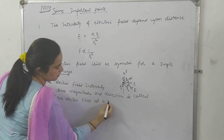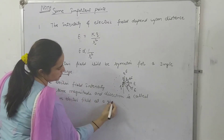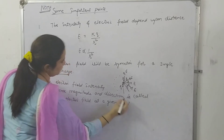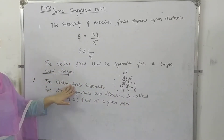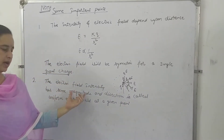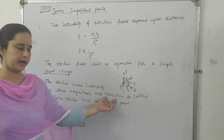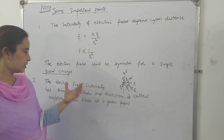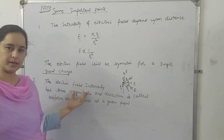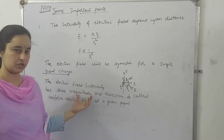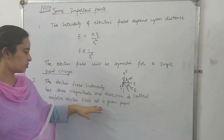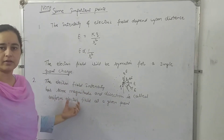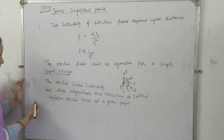When electric field intensity has the same magnitude and direction at every point, it is called a uniform electric field. If the electric field intensity changes either in magnitude or direction, then it is called a non-uniform electric field.